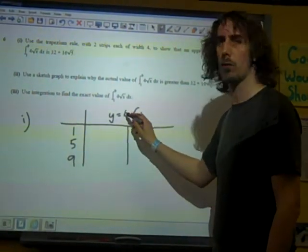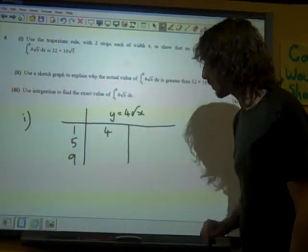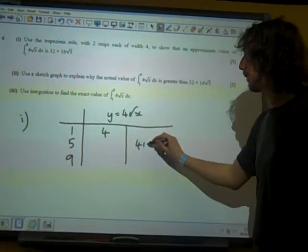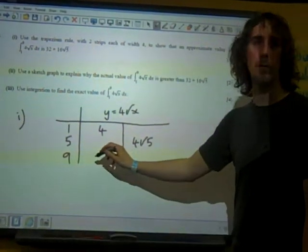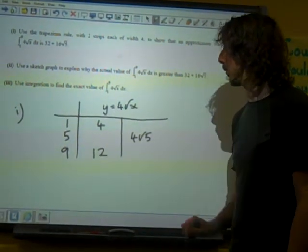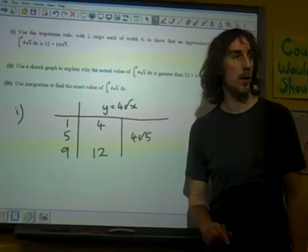So we've got four root one. Then we've got four root five. And we've got four root nine, which would be twelve, and so we get those three values.